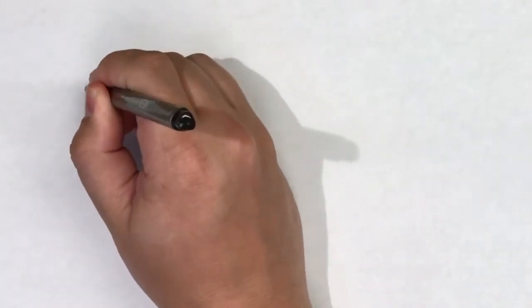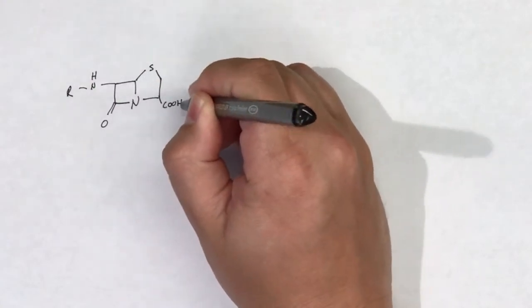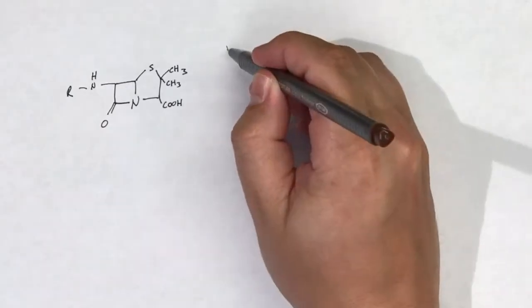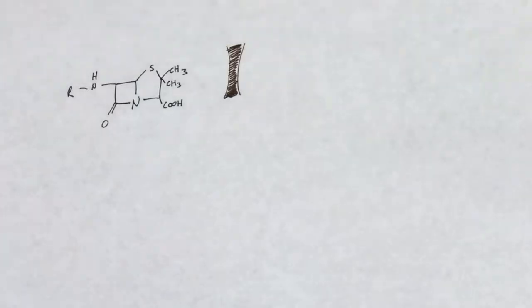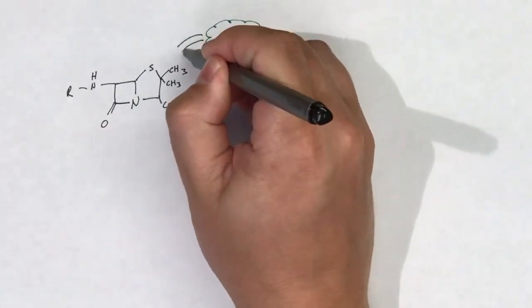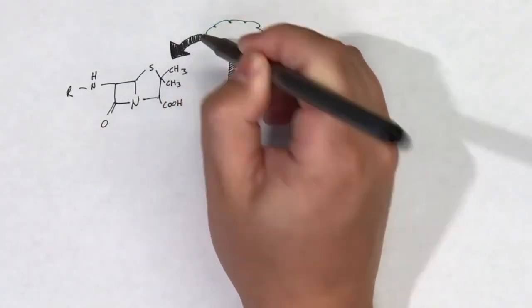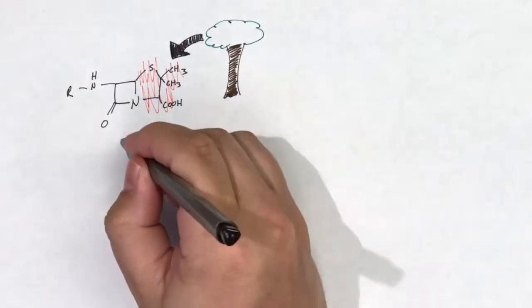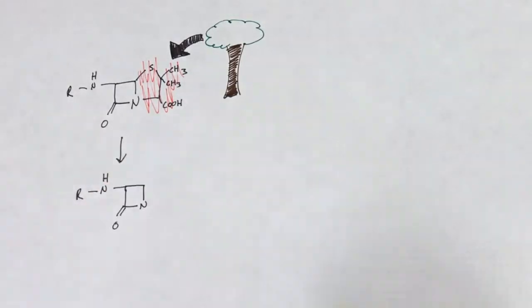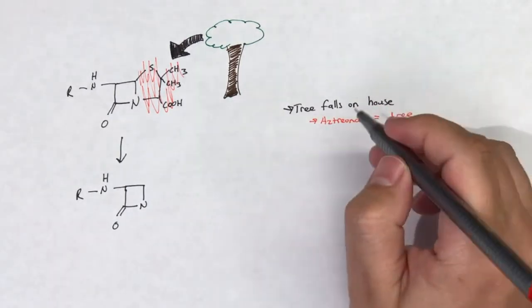An easy way to remember aztreonam is to remember this story. If you think of the structure of a beta-lactam having two joined rings, you can kind of imagine that the structure of the molecule resembles a house. Now imagine that this is your house and a tree fell on it. The experience would be quite negative and it would let a lot of air into your house.